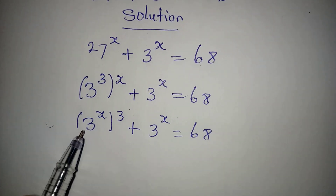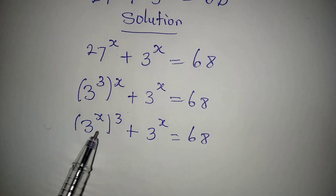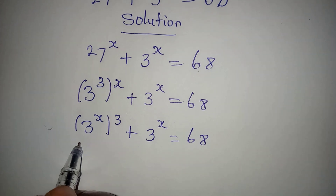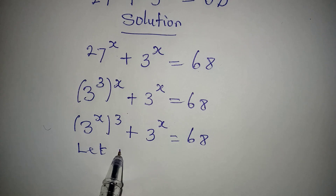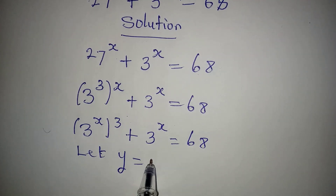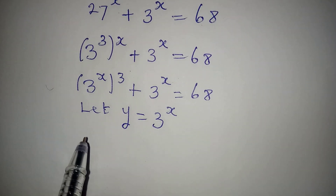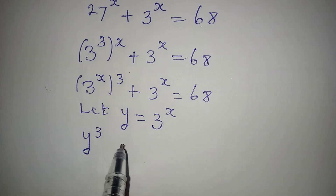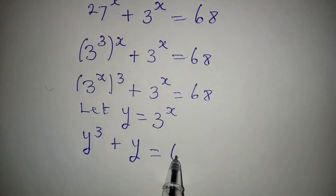The reason for this is for us to have the same thing — 3 to the power of x — in two places. So we are going to let a letter represent 3 to the power of x. Let y be equal to 3 to the power of x, which means we'll have y to the power of 3 plus y equal to 68.